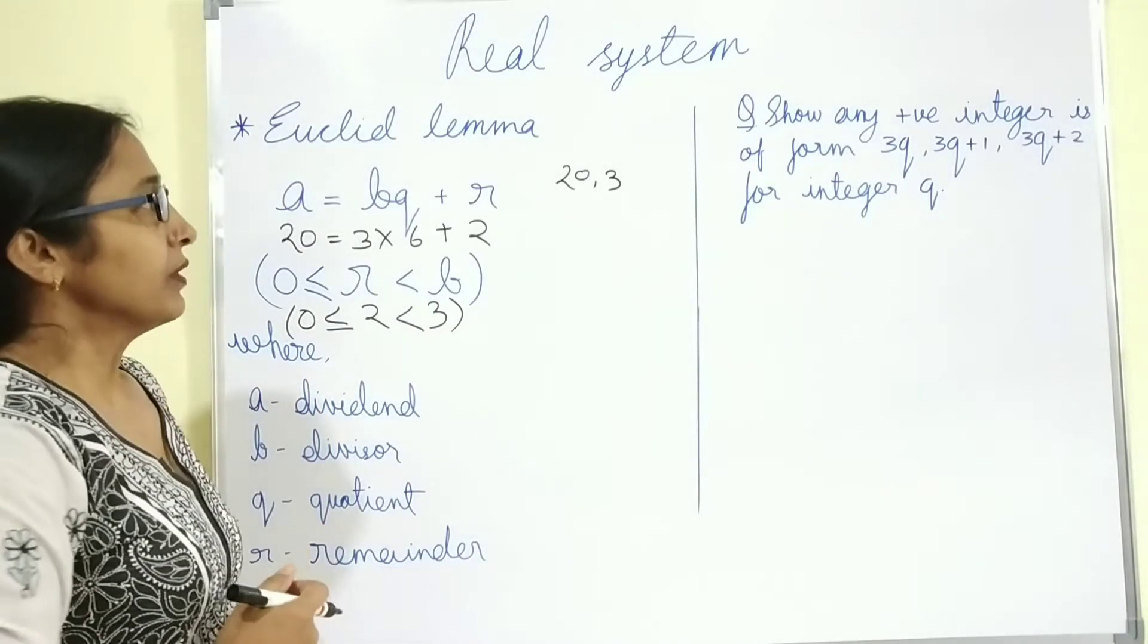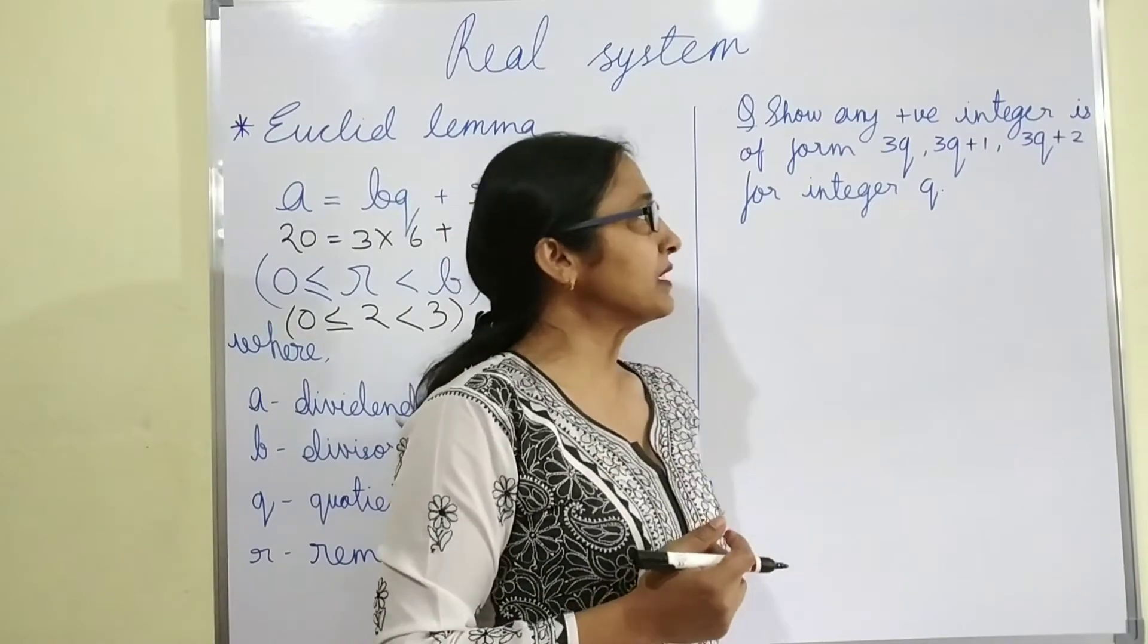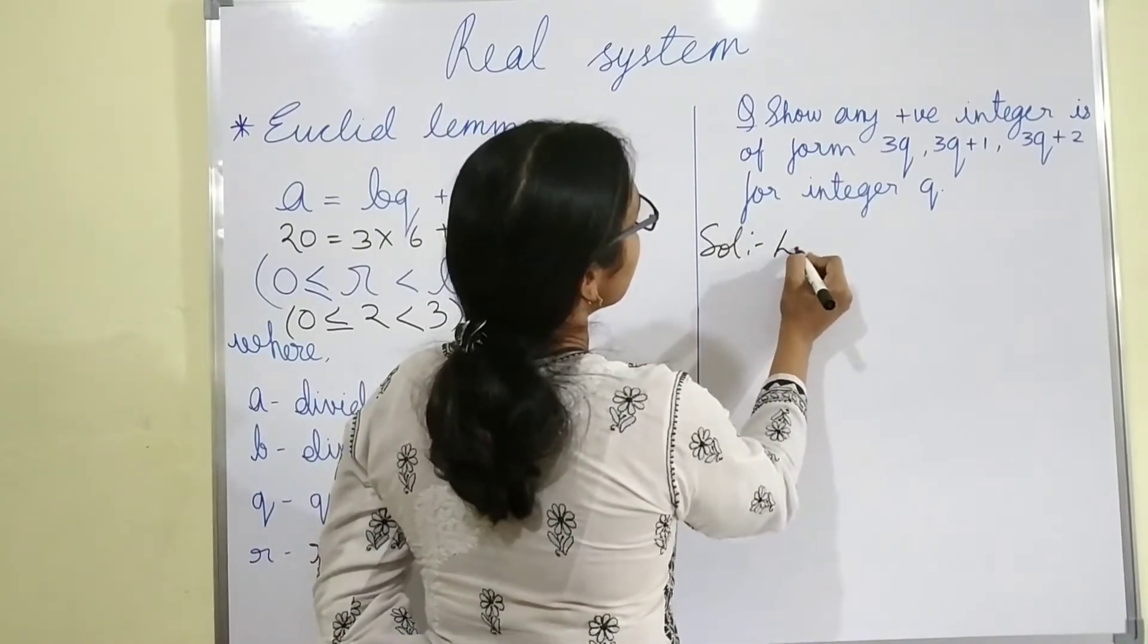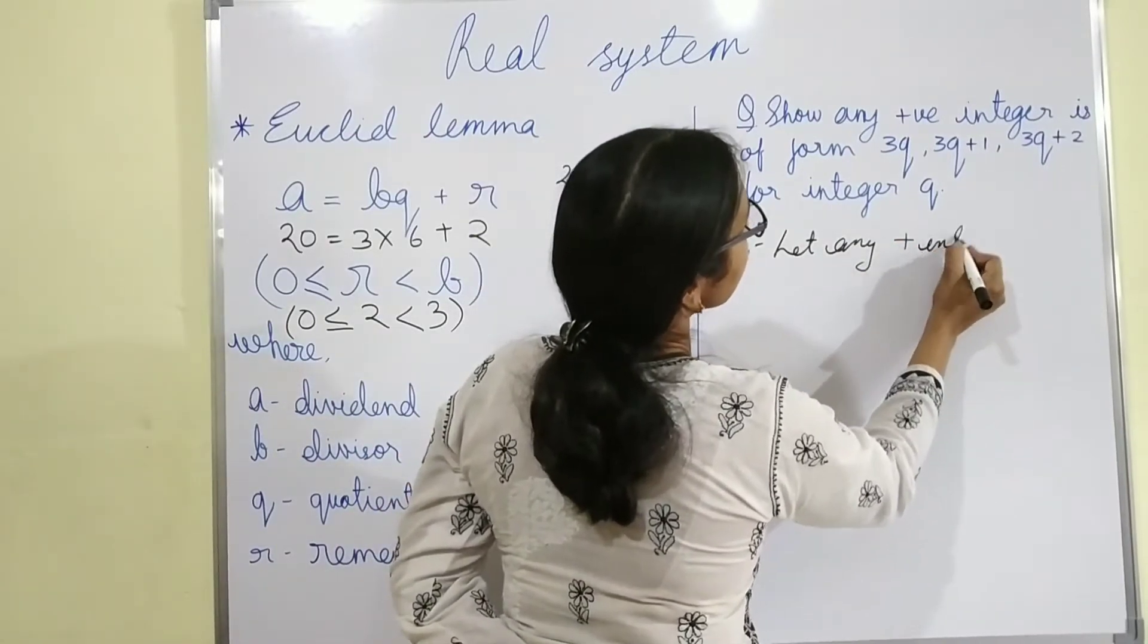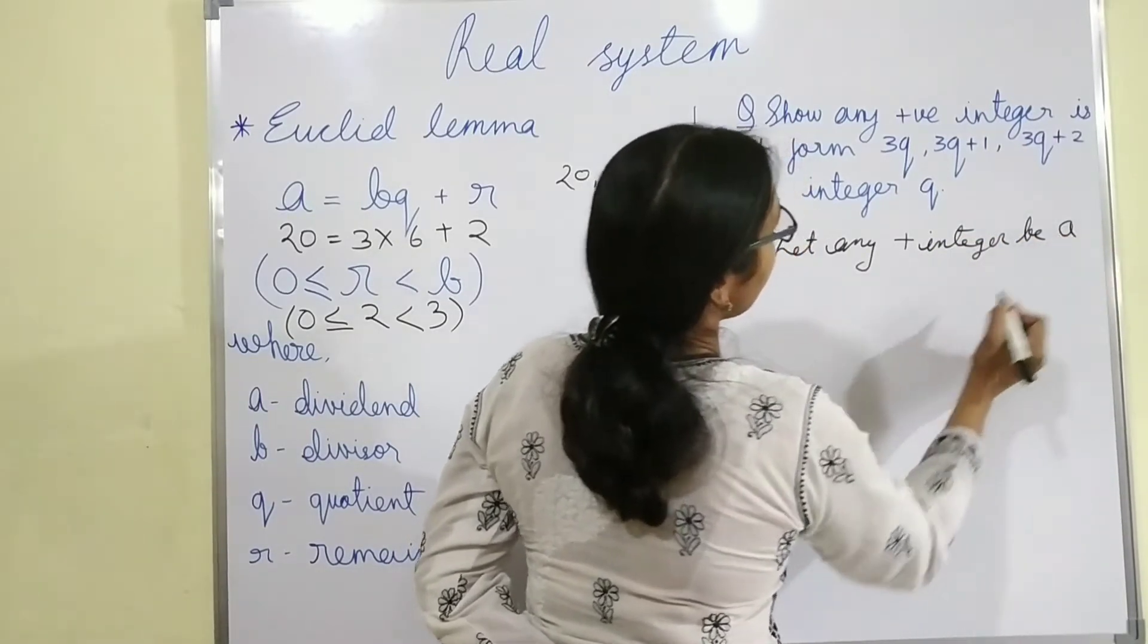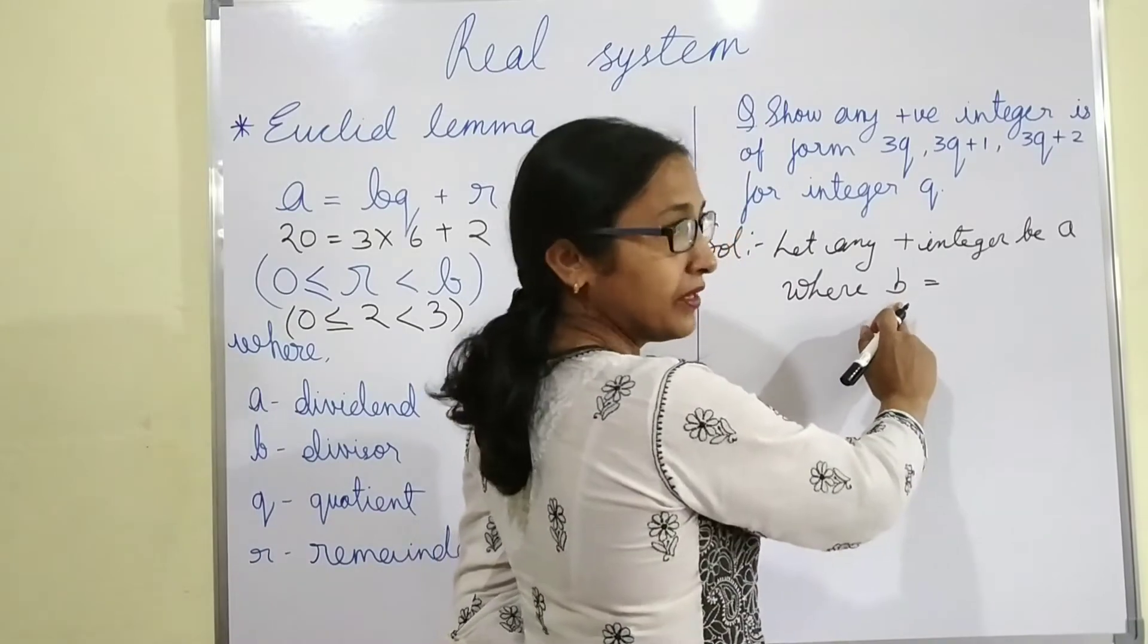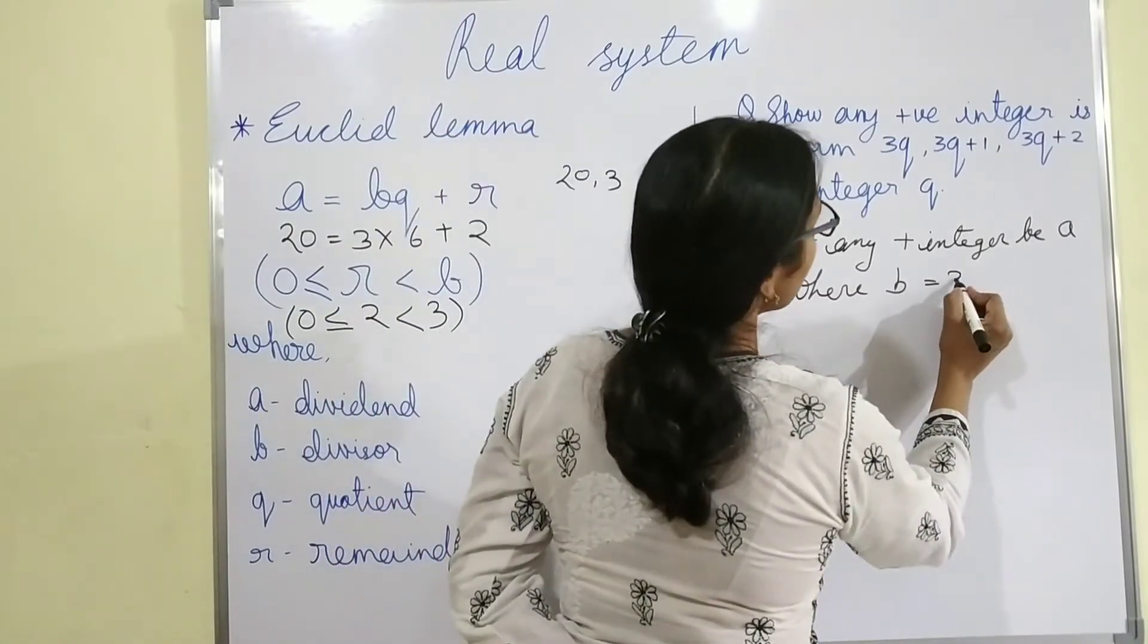Now next question is show any positive integer is of form 3Q, 3Q plus 1, 3Q plus 2 for integer Q. So let any positive integer be A, where B equals to, B means divisor, where B equals to 3.